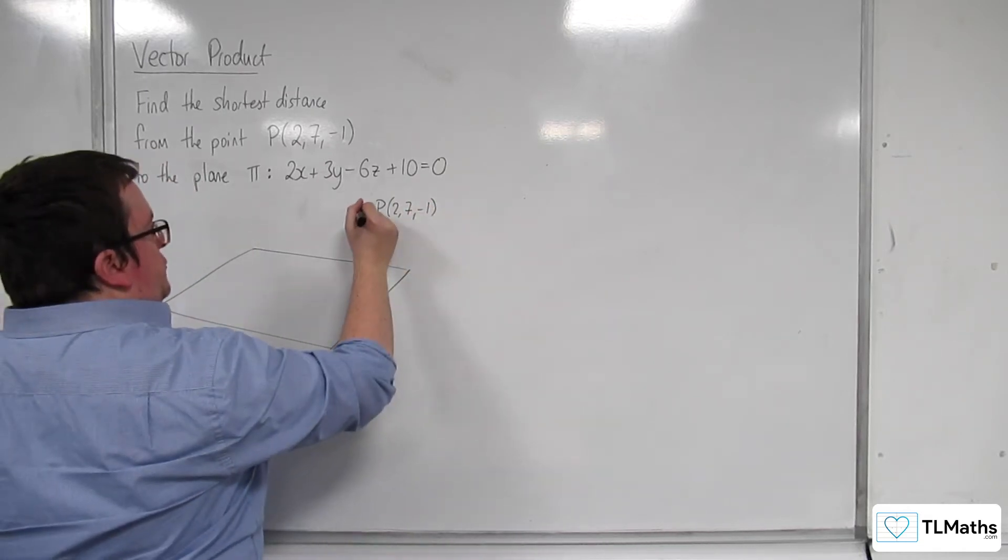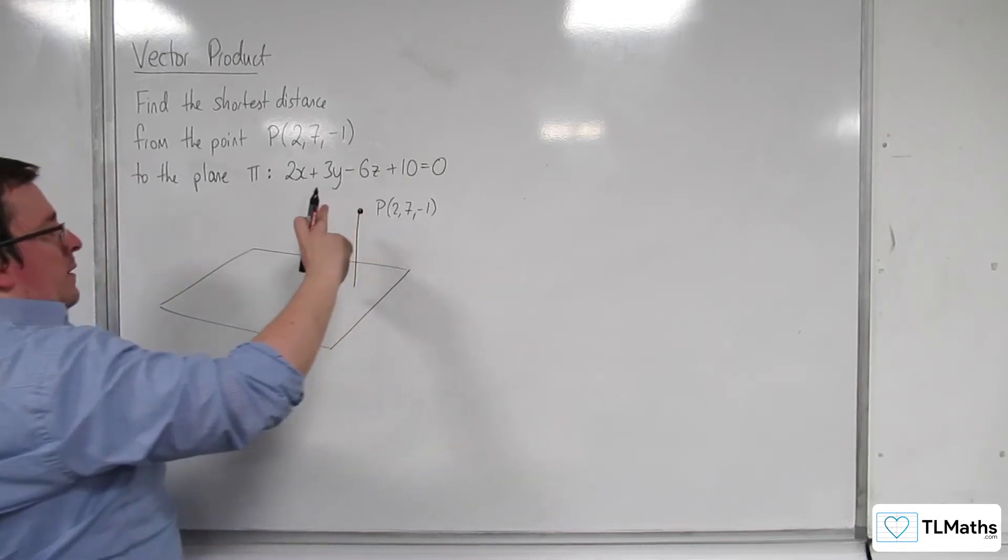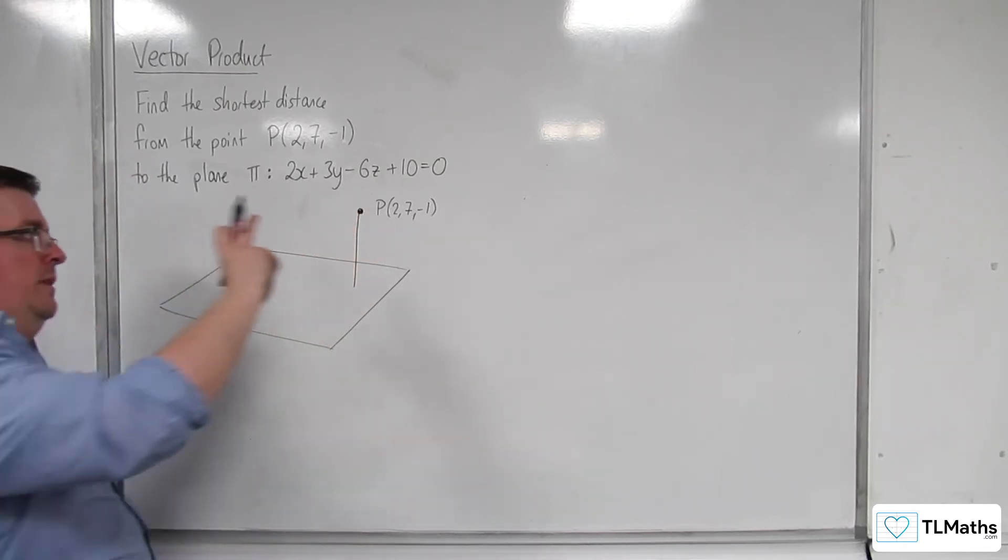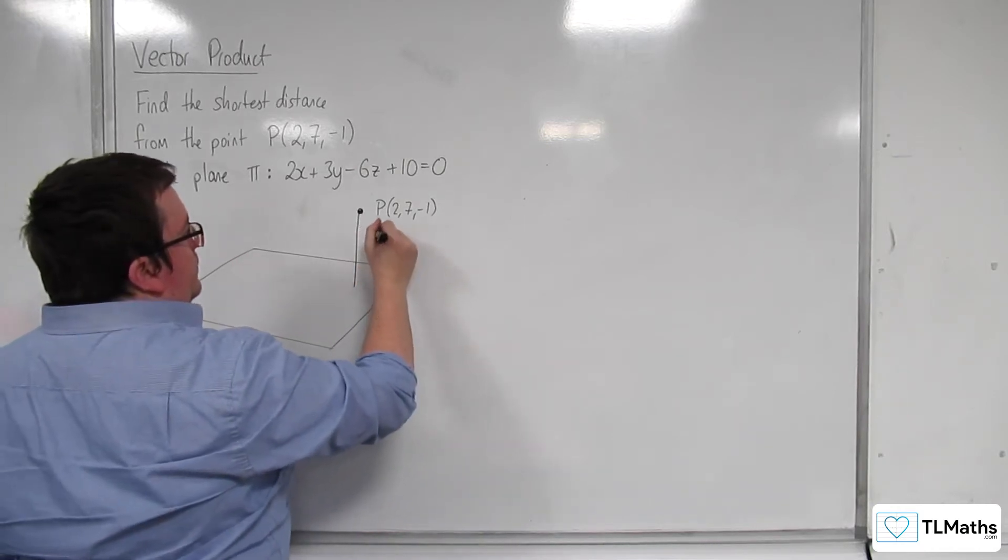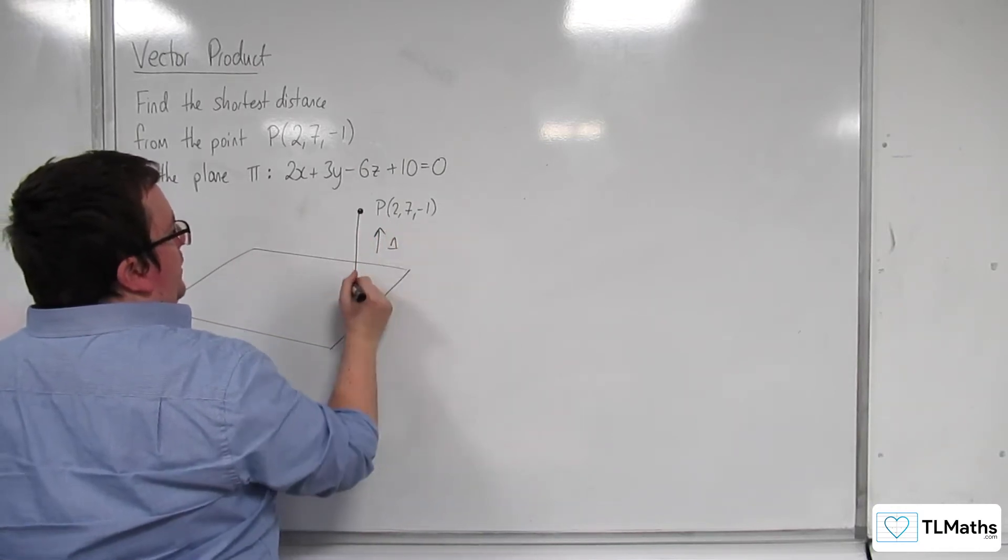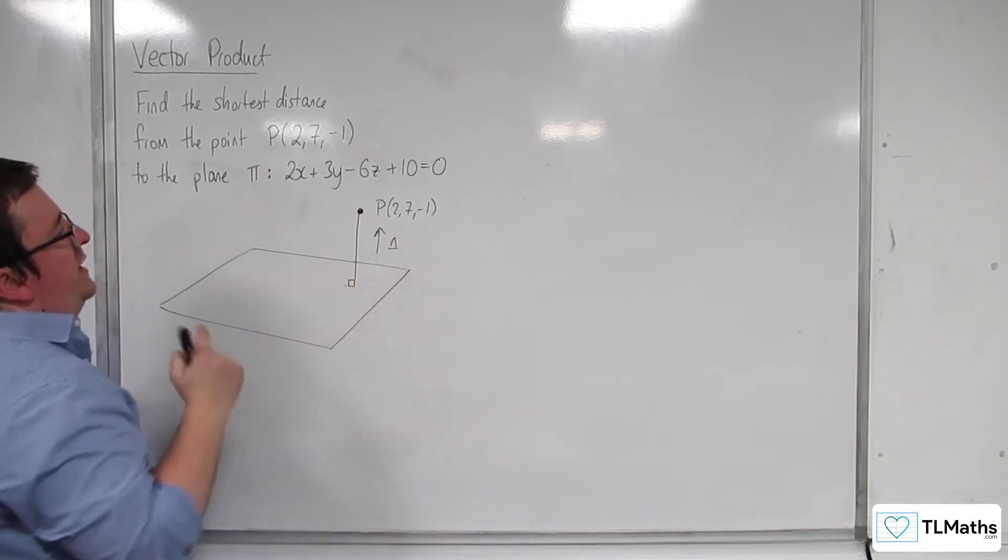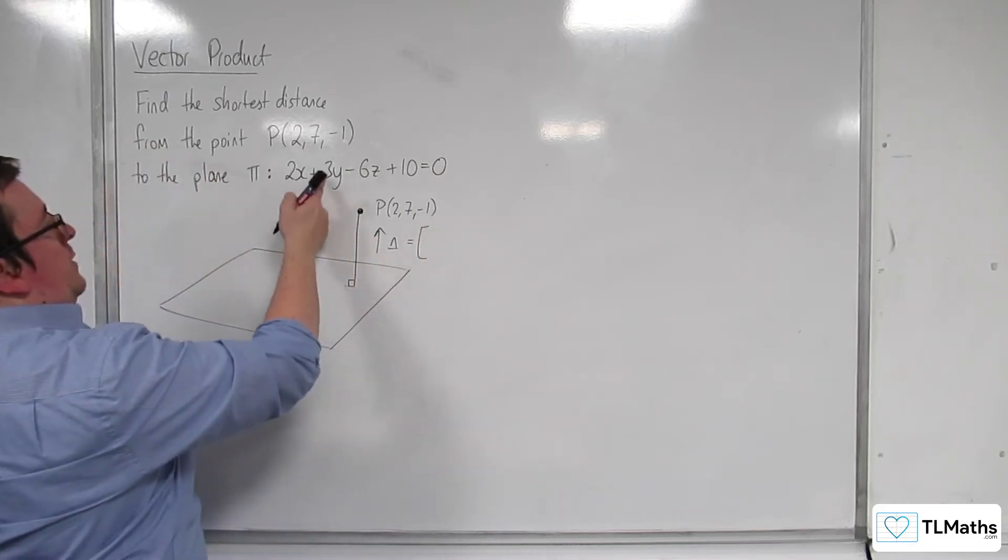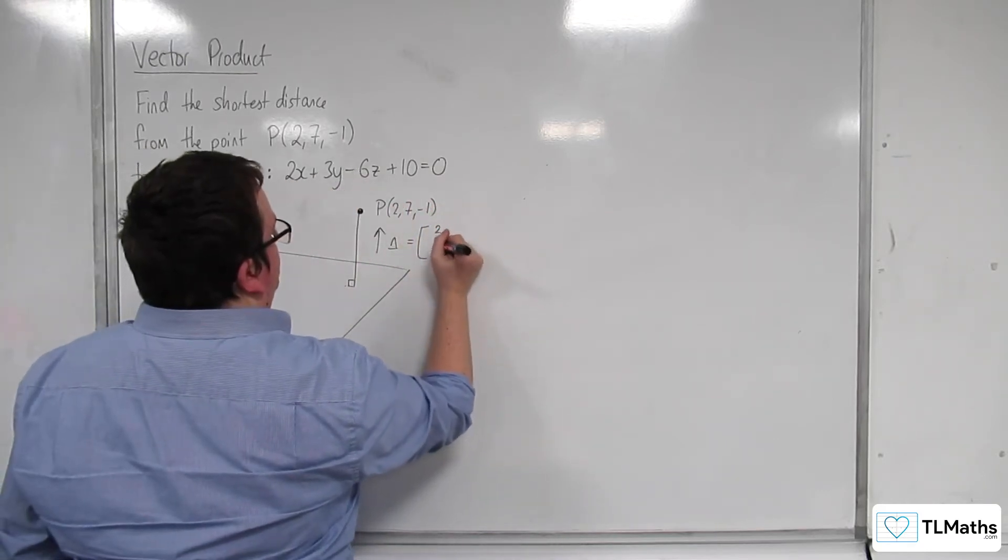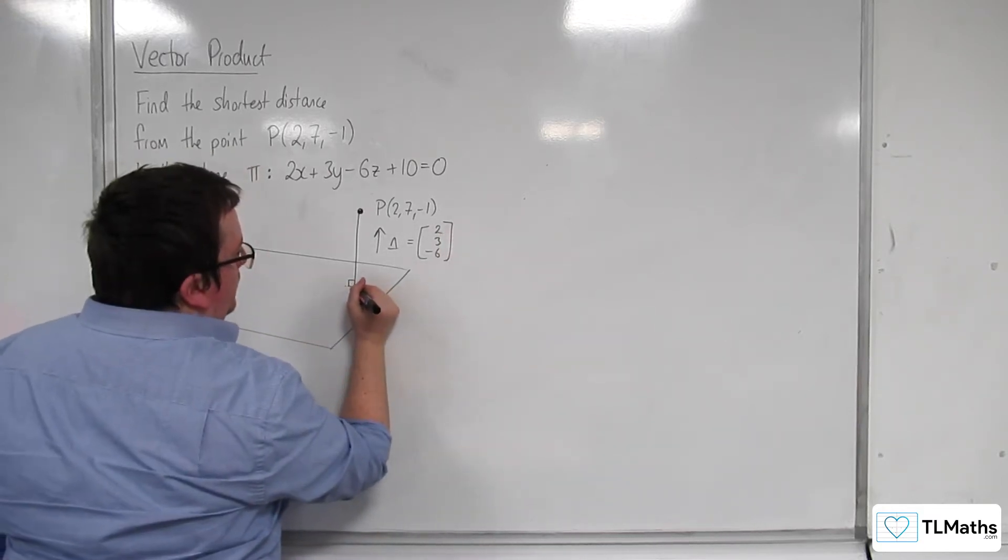Now the shortest distance from P to the plane will be parallel to the normal vector for the plane, because it's got to make a right angle with the plane, so it's got to be perpendicular to it. So it's going to be parallel to the normal vector, which we know is (2, 3, -6). And this point where it meets, I'm going to call that the point M.